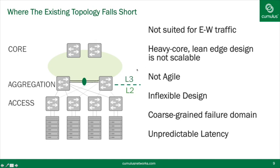This is also a design that is heavy in the core — all intelligence resides in the two aggregation boxes with very little at the access layer. When building large-scale networks, scale works better when you push intelligence out to the edges. It's also not agile: because it uses Layer 2, it makes it difficult to spin up new networks or throw in new racks quickly. It's also inflexible because a subnet is essentially tied between the two aggregation boxes.